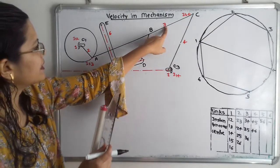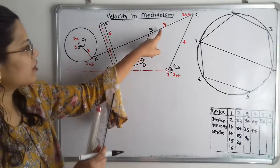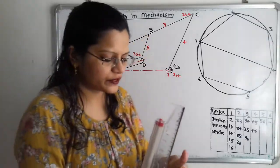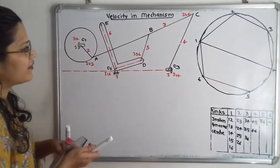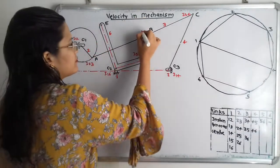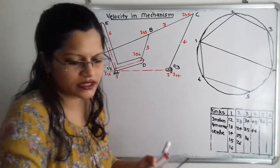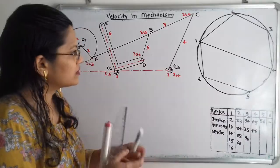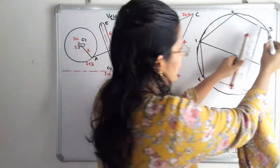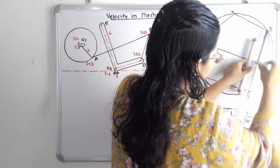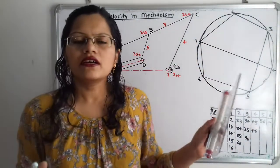Link 3 is connected to link 5 at point B, so we have i35. We add this connection in the circle diagram by joining 3 and 5. It is important to observe all connections carefully before completing the Kennedy's method diagram.